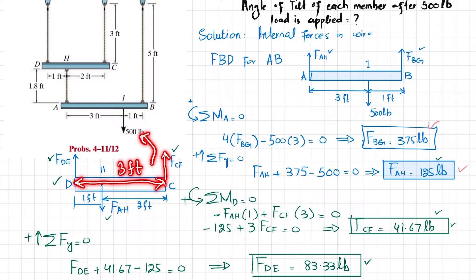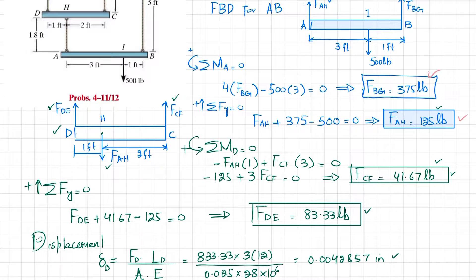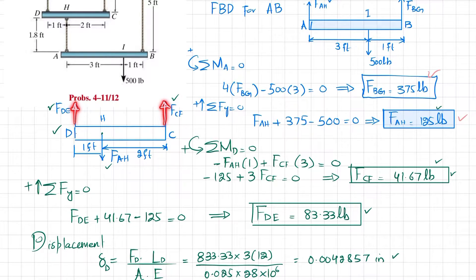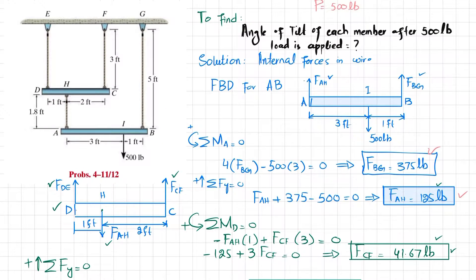From the moment equation, F_CF = 41.67 pounds. Applying the force equilibrium condition in the y-direction: F_DE + F_CF − F_AH = 0. F_DE + 41.67 − 125 = 0 (note F_AH is negative here as it acts downward), giving F_DE = 83.33 pounds. Now we know the forces in all four wires.